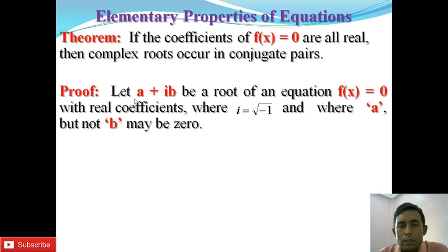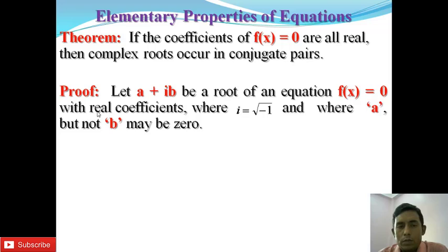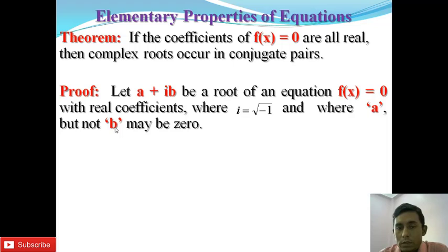Let a + ib be a root of the equation f(x) = 0 with real coefficients, where i = √(-1) is an imaginary number, and where a and b are real but b may not be zero.